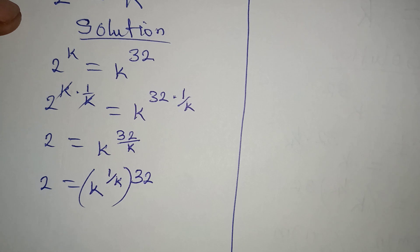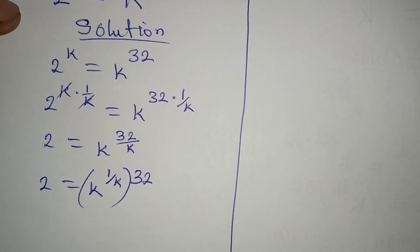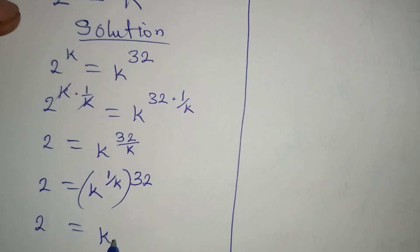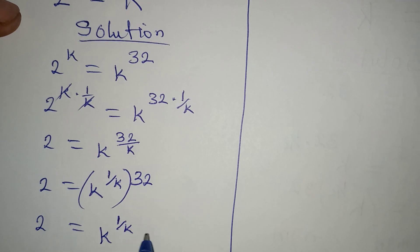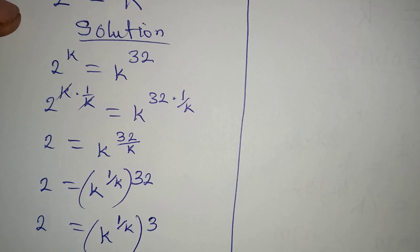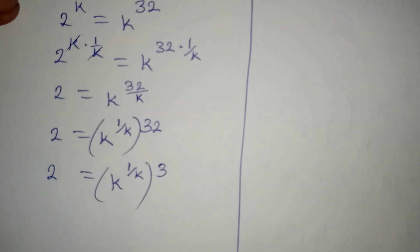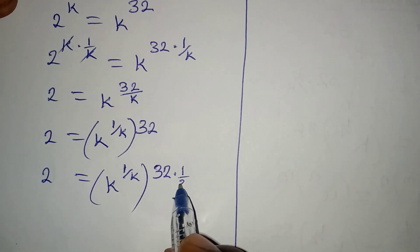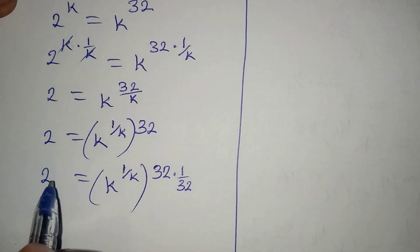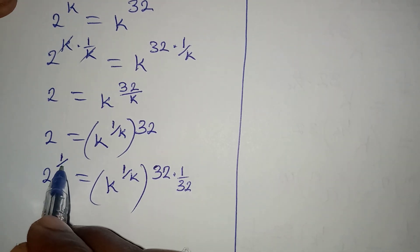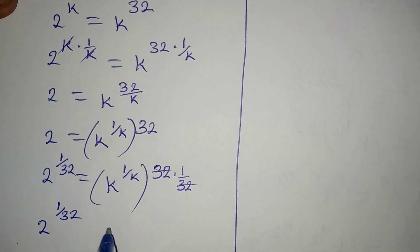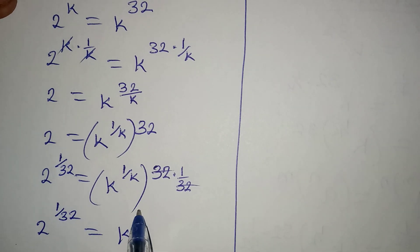I will try to remove 32 from here. So: 2 equals k to the power of 1 over k, to the power of 32. I will multiply both sides by 1 over 32, just to remove that. On the left I will have the same 1 over 32, so that the 32s cancel. Then 2 to the power of 1 over 32 will be equal to k to the power of 1 over k.